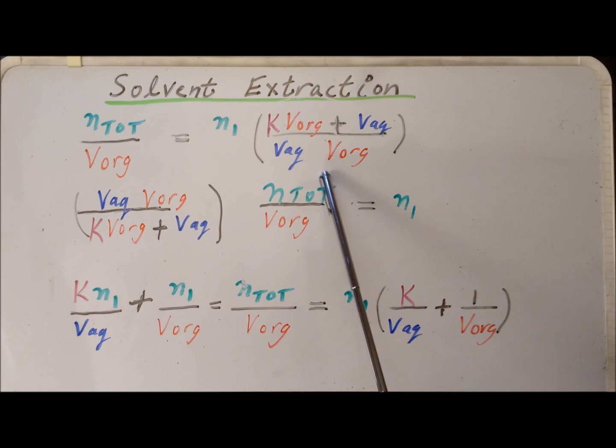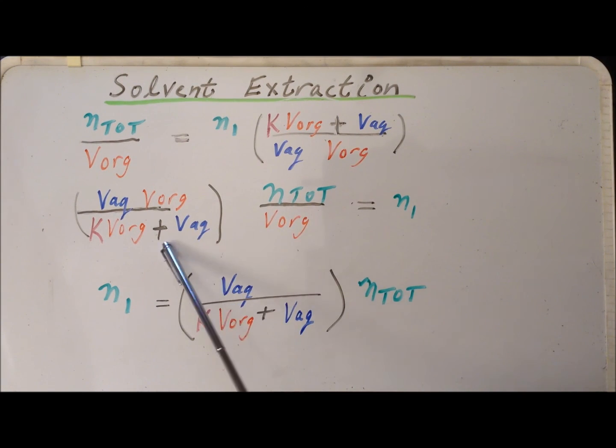So then we take each side of this equation and multiply it by the reciprocal of this particular fraction. That gives us the reciprocal on this side times N_tot over V_org and then we simply have N_1 on the right-hand side. Then we notice on the left-hand side that V_org cancels and we're left, if we flip it around to make it nicer, that N_1 equals V_aq divided by K V_org plus V_aq times N_tot.